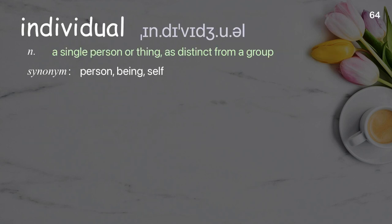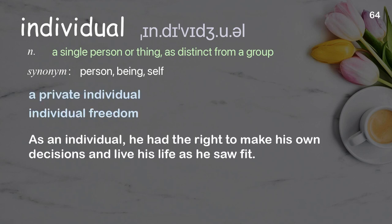Individual: a single person or thing as distinct from a group. Examples: a private individual, individual freedom. As an individual, he had the right to make his own decisions and live his life as he saw fit.